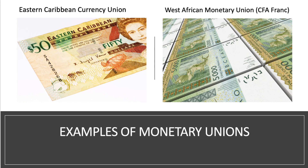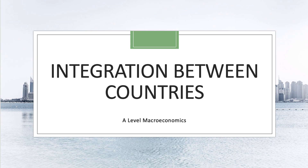Monetary union is the next stage of integration. The Euro is a single currency area with 19 member nations. There are other monetary unions worth exploring: the West African Monetary Union, which uses its own franc as a single currency, and the Eastern Caribbean Currency Union, which also uses one currency within their trade and economic area. So there we go — a quick look at integration between countries, going from free trade all the way through to monetary union.